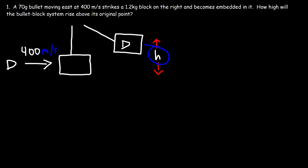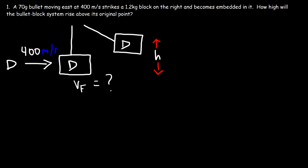To calculate the height, once the bullet becomes embedded in the block, the speed of the bullet-block system will be less than 400 meters per second. We need to calculate that speed after the collision. After the collision, energy will be conserved as the bullet-block system rises to a new height. But during the collision, energy is not conserved because the two objects stick together — we have an inelastic collision.